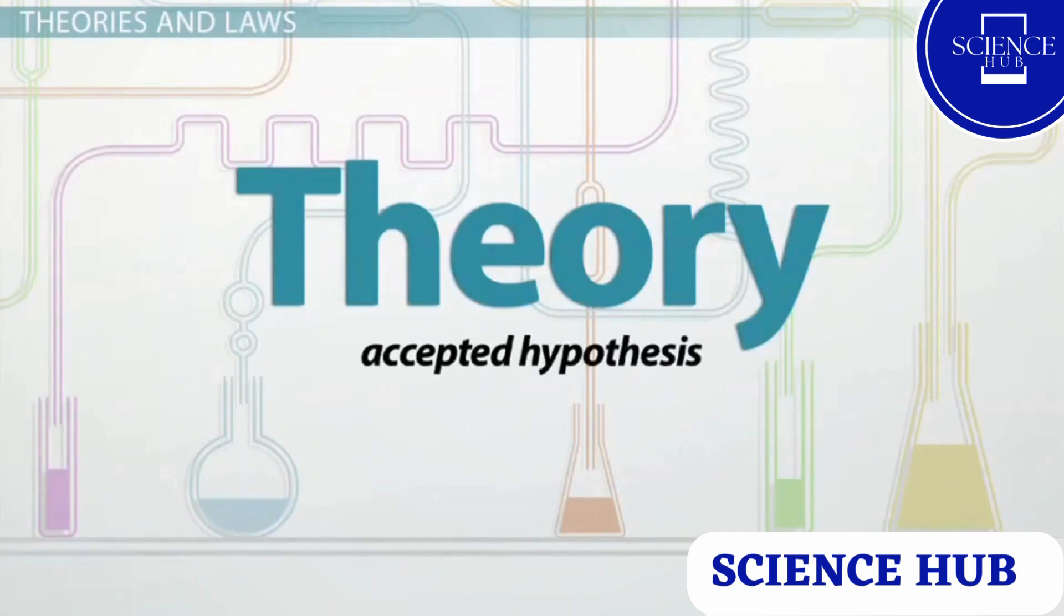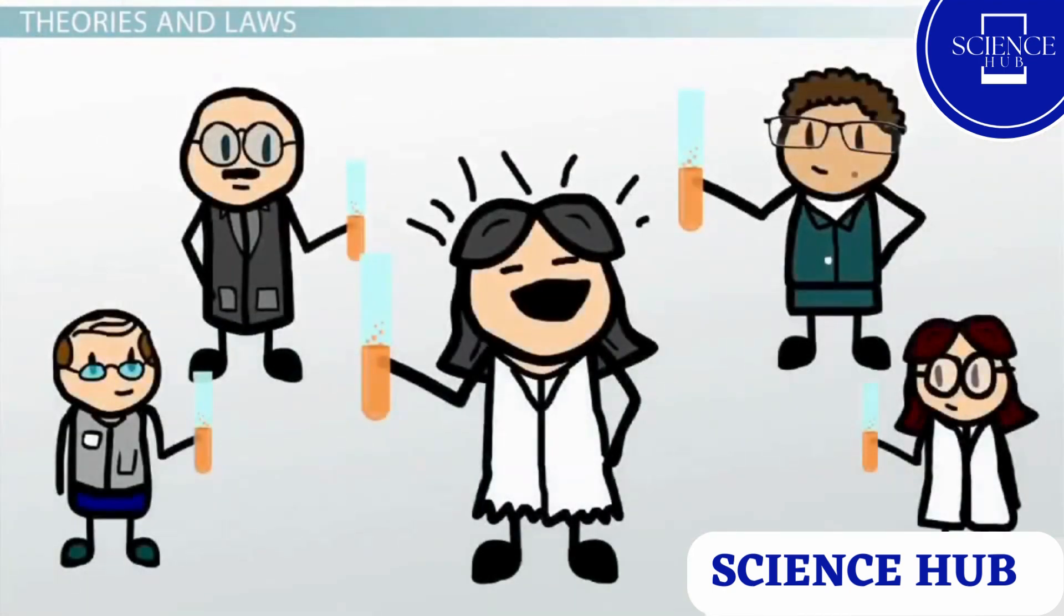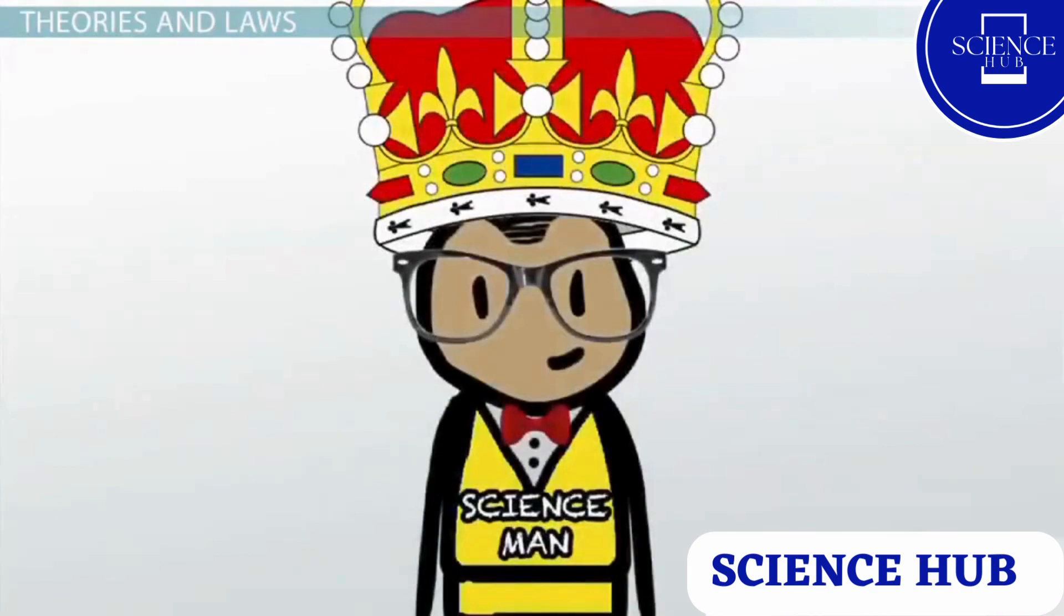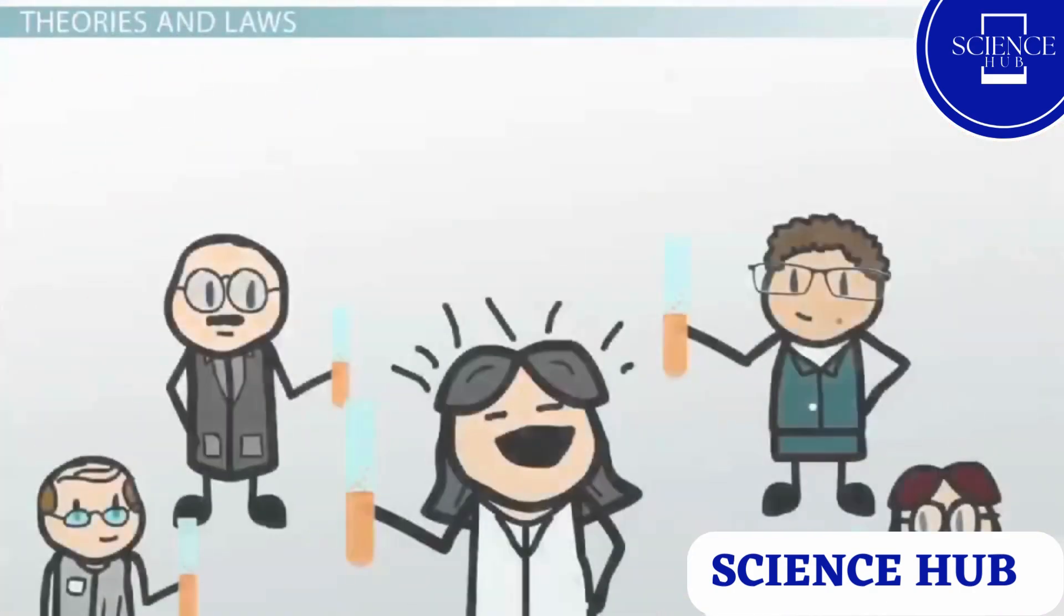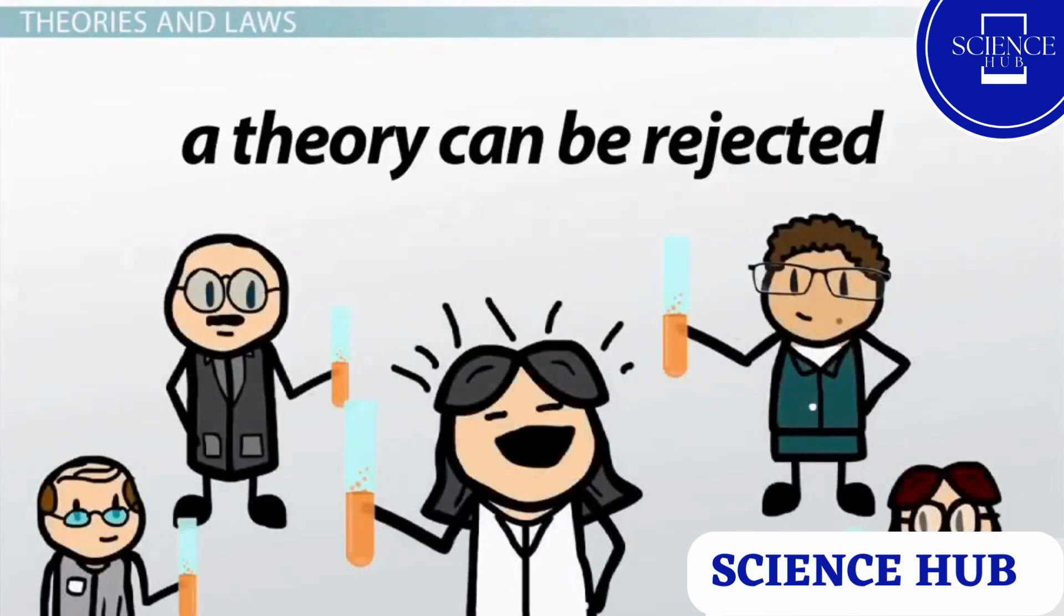When one hypothesis has been tested by many different scientists, and most of them have come to the same basic conclusion, then we can start calling the hypothesis a theory. There isn't any grand master of science who makes the final decree about a theory. It's more like a general consensus, and a theory can still be rejected if further research reveals enough evidence to refute it.